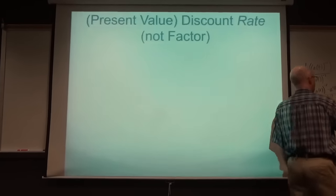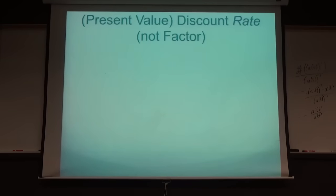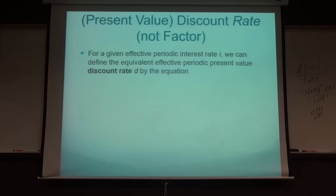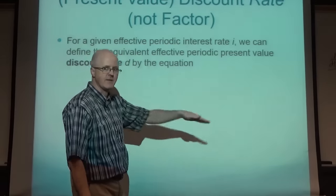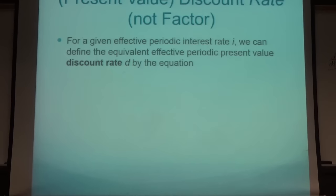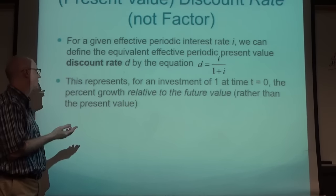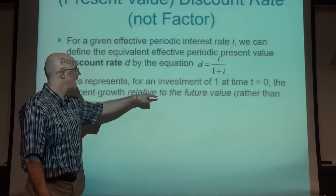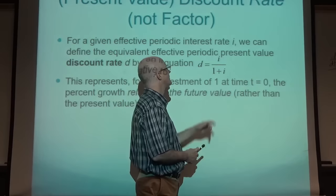Getting close to the end. There's also something called a present value discount rate (not discount factor), called D. For a given effective periodic interest rate i, D = i/(1+i). This represents the percent growth in an investment relative to the future value (ending amount), rather than relative to the present value (starting amount). Instead of taking i divided by 1 (interest over starting amount), you take i divided by (1+i) (interest over ending amount).